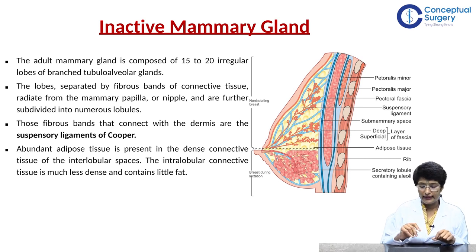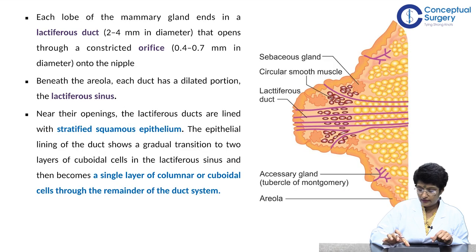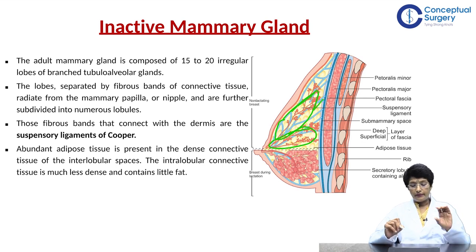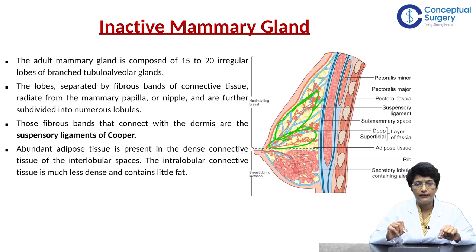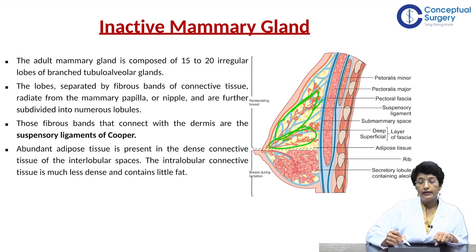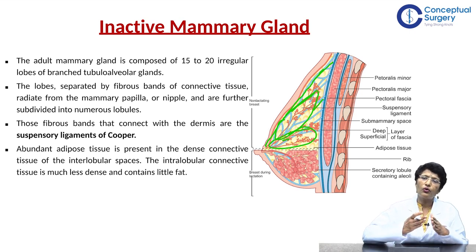In an inactive gland, you will find about 15 to 20 irregular lobes of breast tissue, separated by fibrous septi. These fibrous bands can radiate from the mammary papilla and divide the breast into lobes. There are also fibrous bands running from the dermis to the pectoral fascia — these are Cooper's ligaments. The conical, tented-up shape of the breast is because of Cooper's ligaments, as they are what keep it in shape.